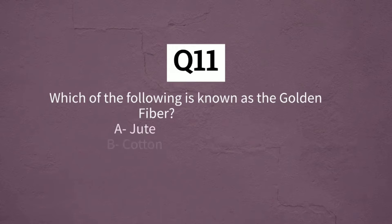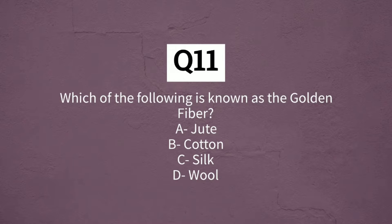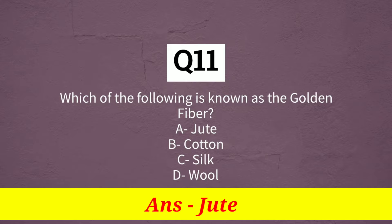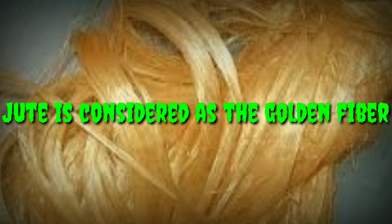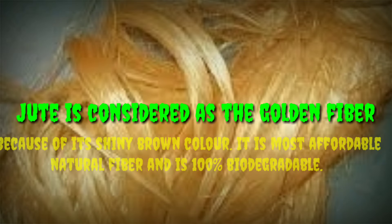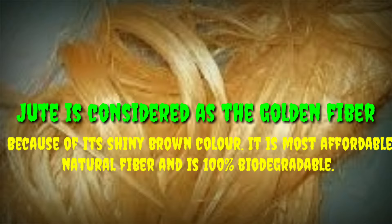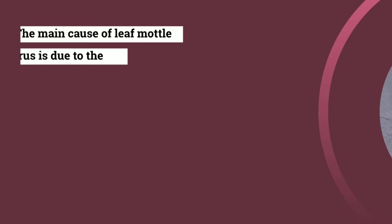Question number 11: which of the following is known as the golden fiber? The options are jute, cotton, silk, or wool. The correct answer is jute. The golden fiber revolution is related to jute production. Jute is considered the golden fiber because it is shiny brown in color, is the most affordable natural fiber, and is 100 percent biodegradable.